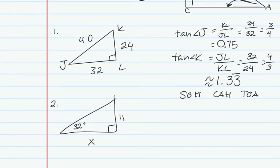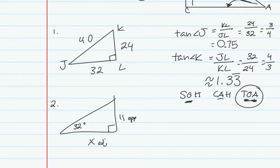The second type of problem is solving for a side length. According to the given angle, I have the leg opposite over the leg adjacent, so I have to use tangent. The tangent of 32 degrees is going to equal the opposite, 11, over the adjacent, X.